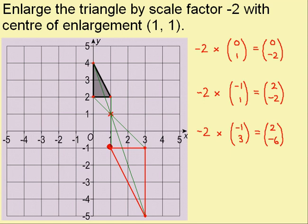The last side will automatically double if we get the other 2 correct. Notice the effect that the negative scale factor has. It means that the triangle is upside down in the enlarged image.